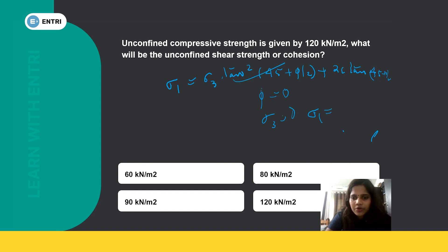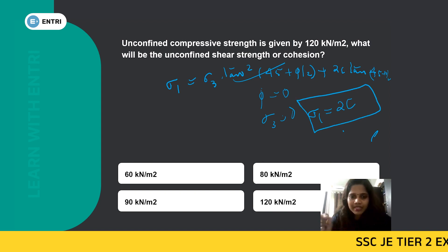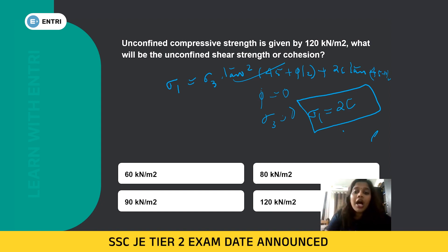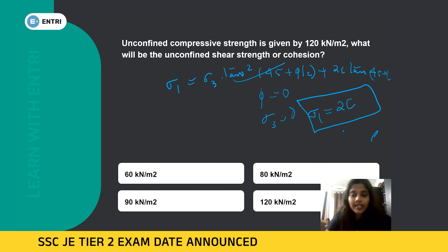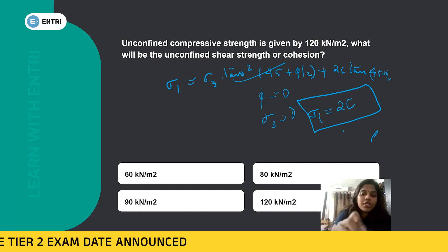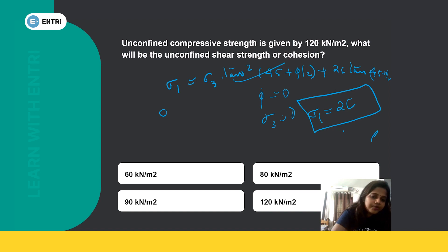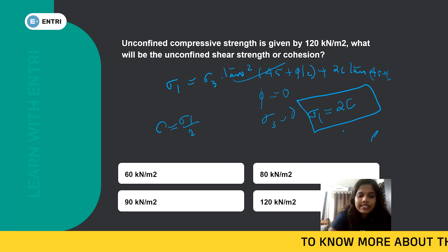Sigma 1 equals 2c in the UCC test. Sigma 3 is the minor (confining) stress, which is zero. Sigma 1 is the unconfined compressive strength, which is 120 kN/m². Therefore cohesion c = sigma 1 divided by 2, so c = 120/2 = 60 kN/m². The answer for cohesion is 60 kN/m².